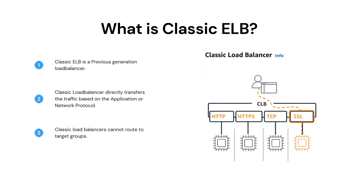Next question: What is Classic load balancer? The Classic load balancer is a previous generation load balancer. It works on HTTPS, HTTP, and network protocols like TCP and UDP, and forwards the traffic in a round-robin pattern to the target hosts. This load balancer doesn't support target groups, and hence we have to manually register the targets with ELB. We can configure health checks to check the health of the target machines. We can also integrate this load balancer with the auto scaling group so we don't have to manually register the targets.